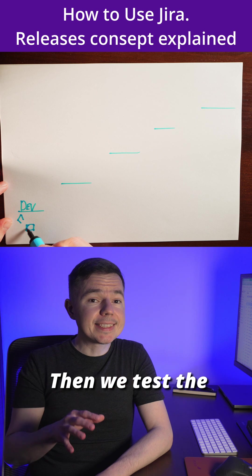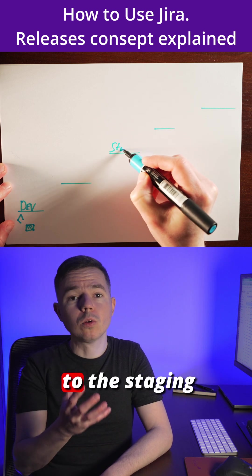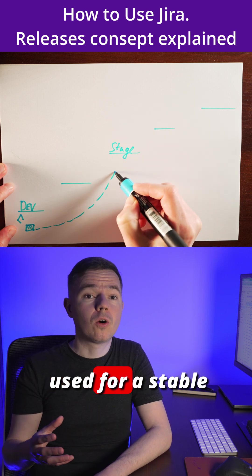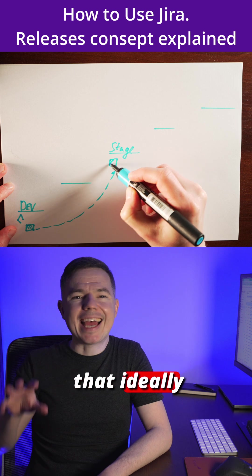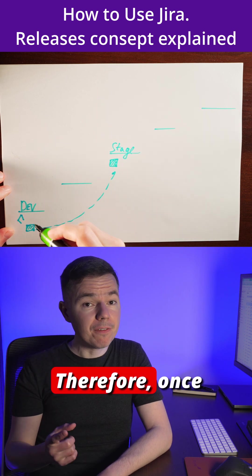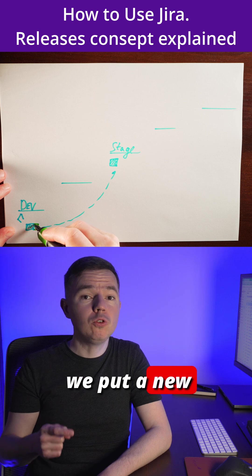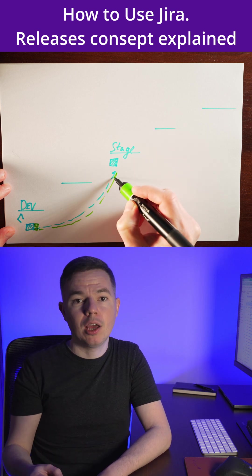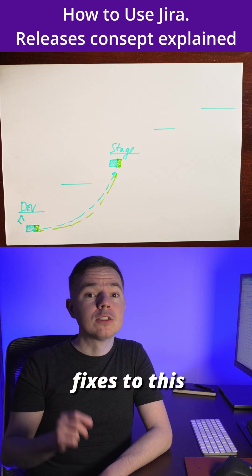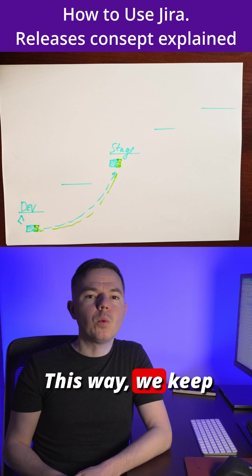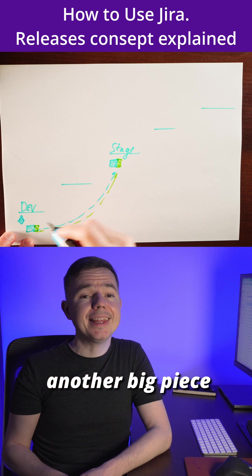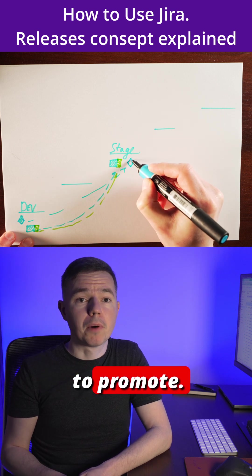Then we test the dev environment and promote code to the staging environment. The staging environment is used for a stable version of the code that ideally doesn't contain obvious defects. Therefore, once we put a new piece of functionality to staging, we will only promote selected fixes to this functionality for some time.